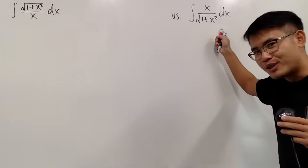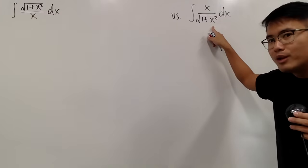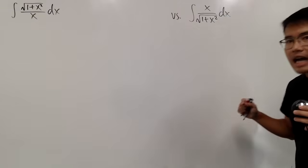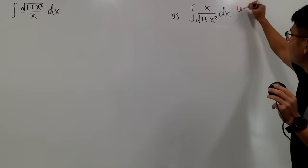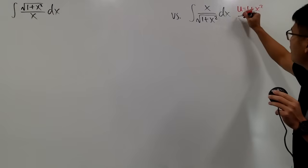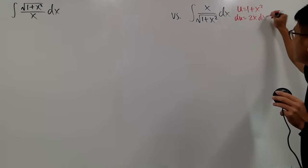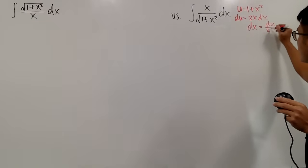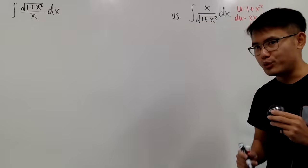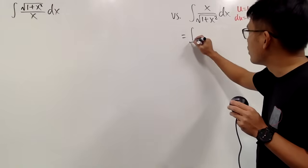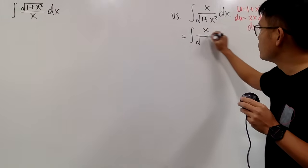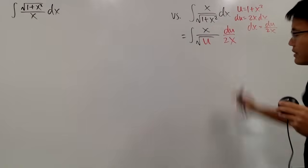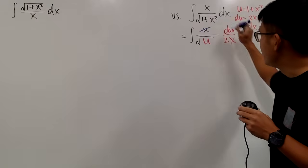Alright, which one's easier? You guys should tell me this one, right? Because in here, we can just let u equal to 1 plus x squared, and the derivative of that is 2x, and we have this x on the top to help us out. So let's go ahead and do that. u equals 1 plus x squared, and du equals 2x dx, and dividing by 2x on both sides gives us dx equals du over 2x. Now we can take this integral to the u world. This equals the integral of x on the top over square root of u, and dx is du over 2x.